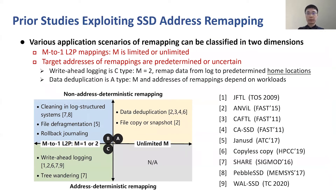A body of works have been proposed to explore SSD address remapping in various scenarios, such as write-ahead logging and data deduplication. We review these works and classify the scenarios in two dimensions as shown in the figure. First, remapping changes the L2P mapping regularity from 1-to-1 to M-to-1, where M is predefined or unlimited depending on workloads. Second, the target addresses of remappings can be predetermined or uncertain. Such a classification will help analyze the limitations of these works, as discussed later.